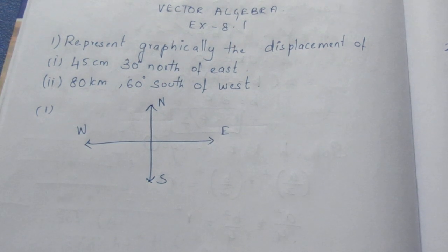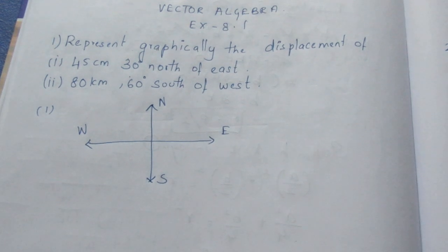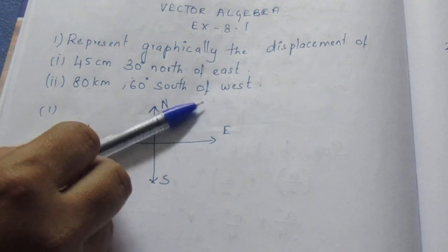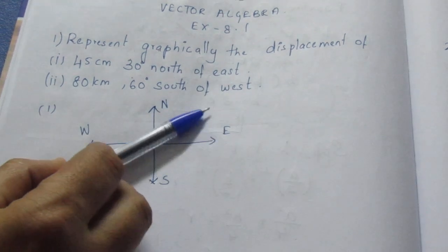Now, there is a line of 45cm. That is 30 degrees north of east. If you look at east, you will see north. East length is 30 degrees north.